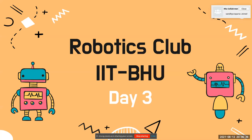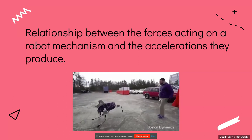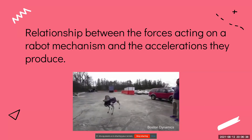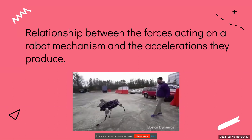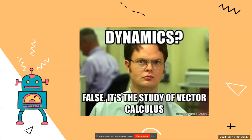We can add parameters to the virtual world to make it more like the real world. There's a relationship between a force acting on a robot mechanism and the acceleration it produces — that's dynamics. More basically, we can say it's a study of vector calculus somehow.